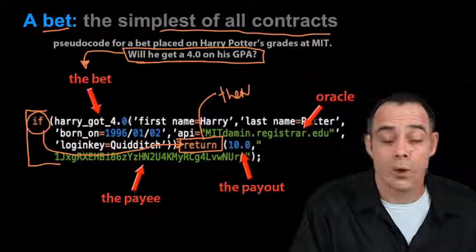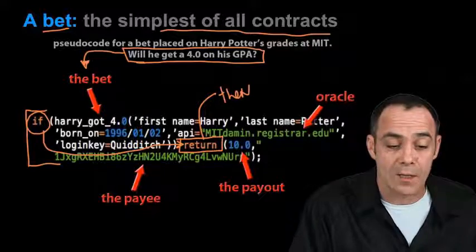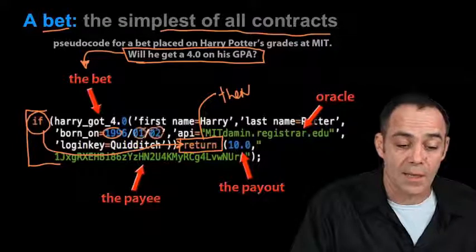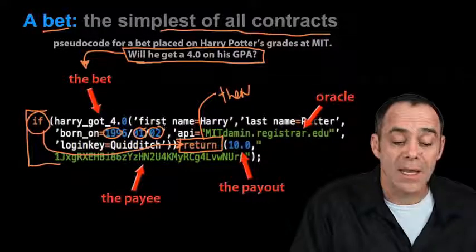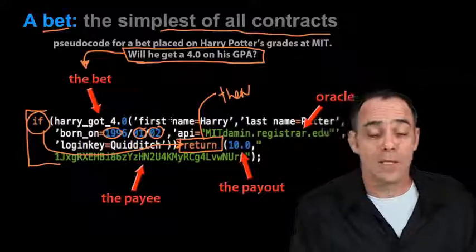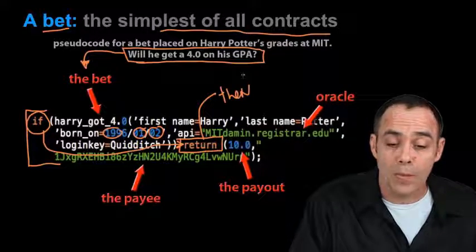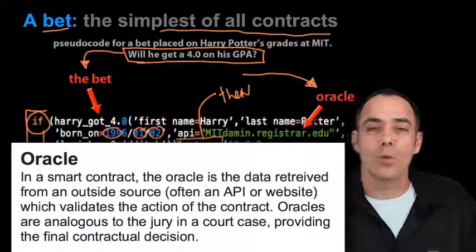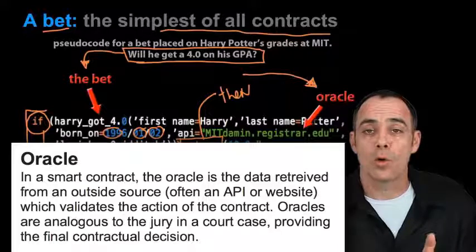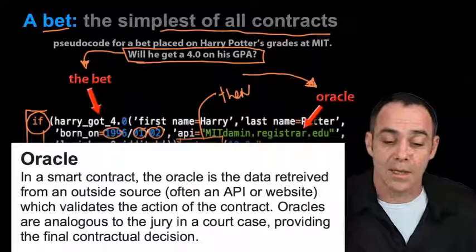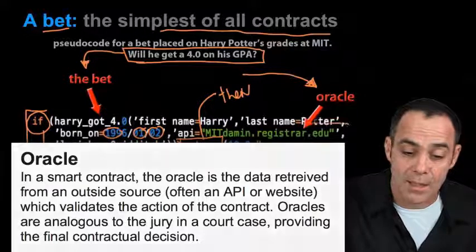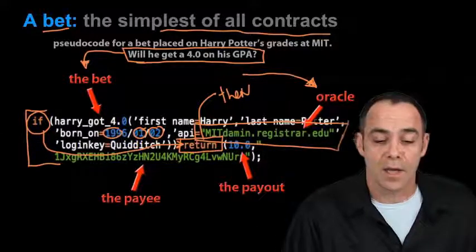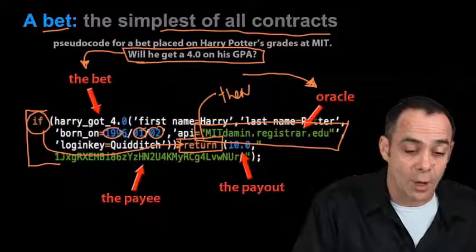If Harry got a 4.0, we have some verification data — Harry, first name, last name Potter, born on a certain date — all the verification data you want to put in. Now, how do we know he gets a 4.0? That's when we rely on something called an Oracle. An Oracle is pre-agreed upon — whoever's making the bet agrees that this Oracle is going to be the thing that makes the decision. In this case, it could be MIT's admin registrar, which actually publishes grades online. You would go to this site with a login key and be able to see Harry Potter's grades on the date of graduation.